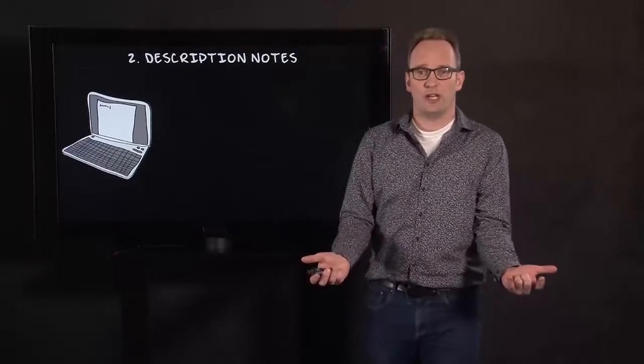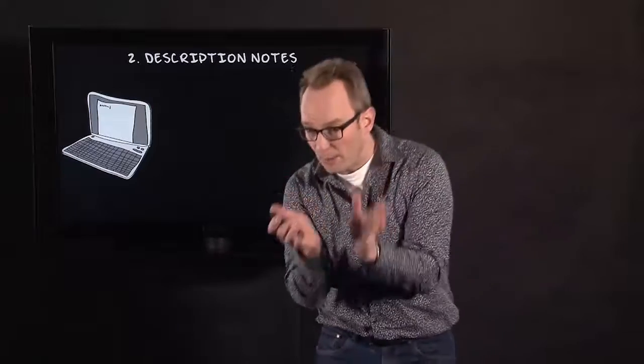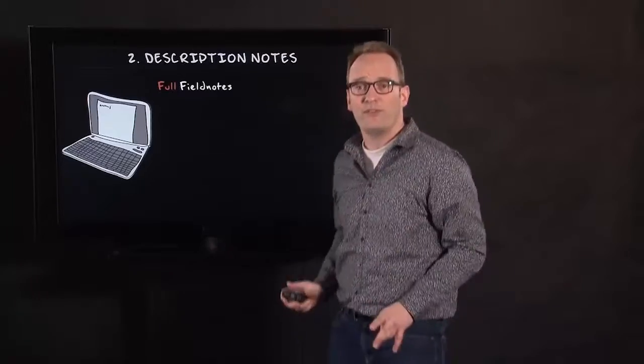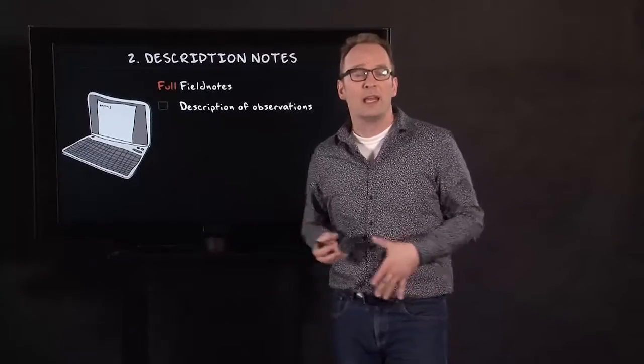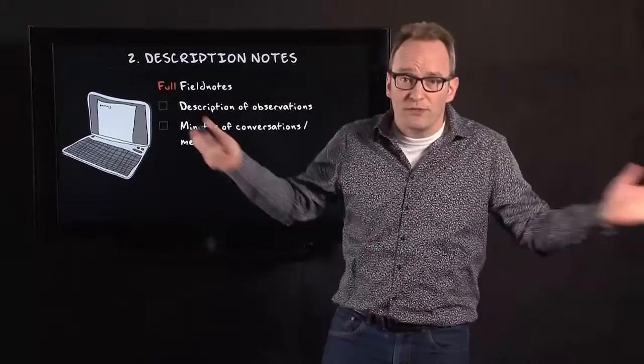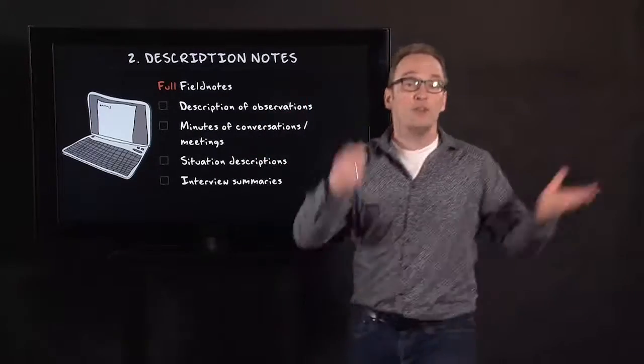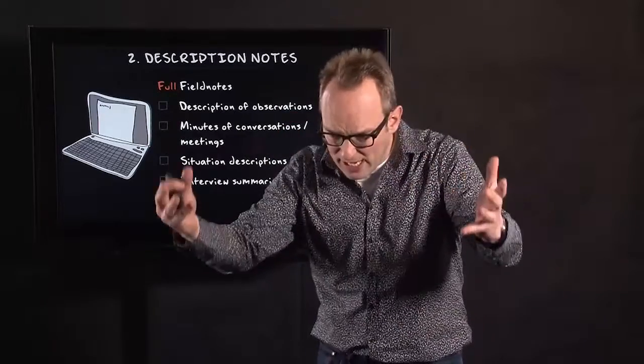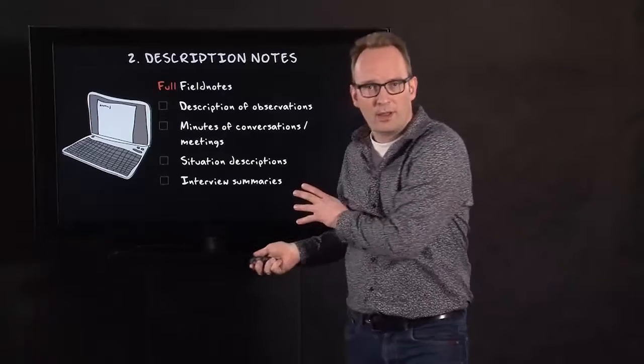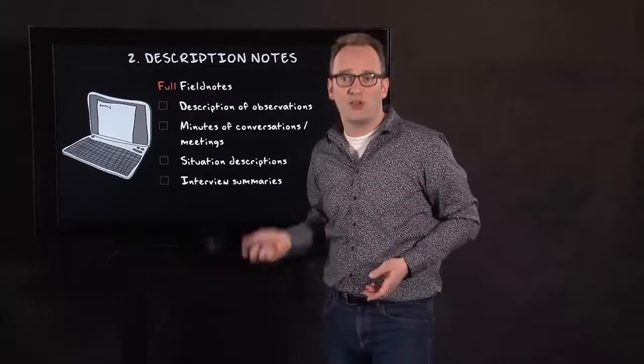That's the first. The second is description notes. Description notes you make afterwards, after something occurred in the field. So in the field, you take these little jottings, out of the field, you start writing full field notes, meaning descriptions of observations, meaning minutes of meetings or conversations, meaning situated descriptions or interview summaries. So you write down reflectively afterwards what happened in the field. And you try to write it as complete as possible. Now that's the second type, description notes.